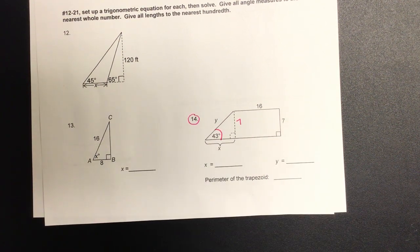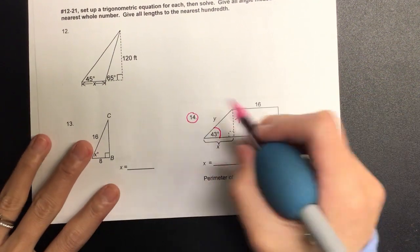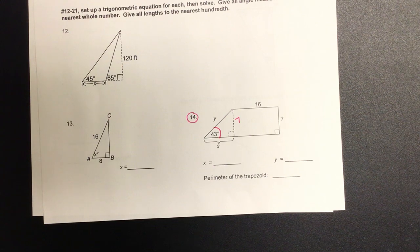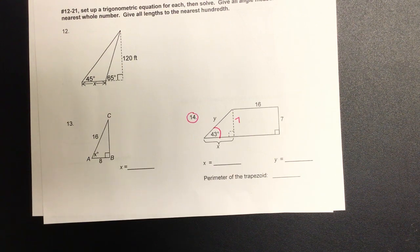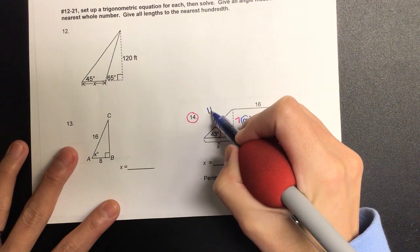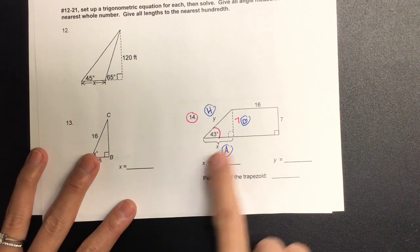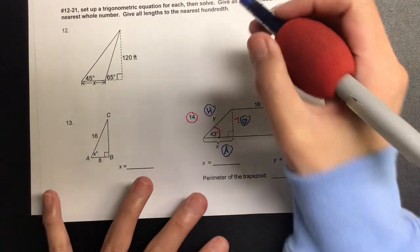Now you could choose to find y first or x first, doesn't matter. Let's find x just because it's alphabetical. Let's start by labeling. When I label from forty-three degrees, the jump is the opposite and the larger side is hypotenuse and here's my adjacent. So if I want to find x, I need O and A.